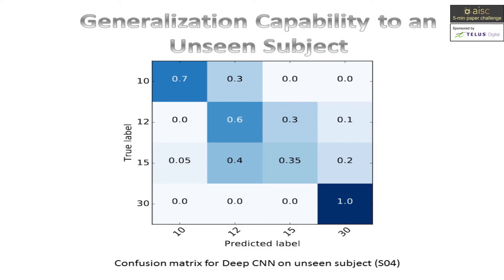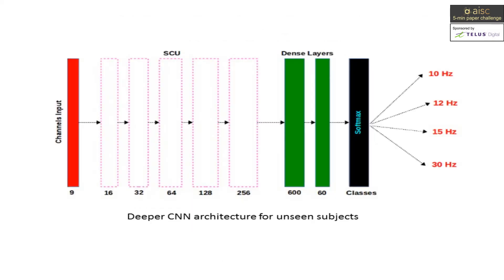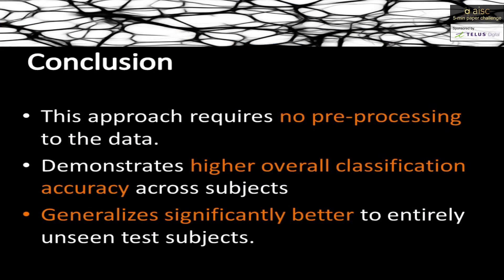To overcome this performance issue, the authors explore a deeper architectural network where they repeat SEO blocks up to a maximum of five. This deeper architecture demonstrates a much better classification accuracy of 0.69, suggesting that a deeper model is required for the unseen subject generalization task. In summary, this approach requires no preprocessing, demonstrates higher overall classification accuracy across subjects, and generalizes significantly better to entirely unseen test subjects.